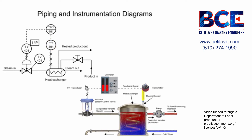A capillary tube that sends a signal from the heat exchanger to the transmitter is represented in the diagram by the line with X's. A dashed line between components indicates an electrical signal.